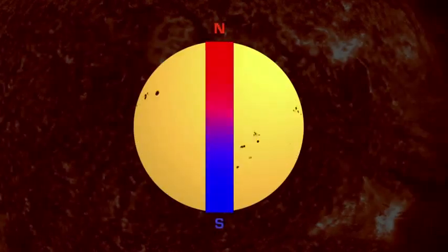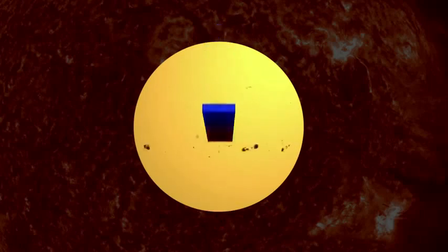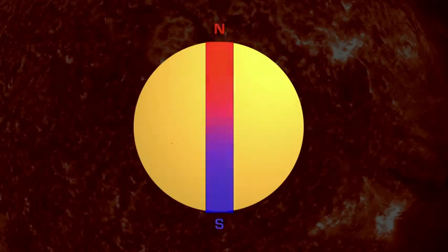Every 11 years, the Sun's poles flip. North becomes south, and south becomes north. So every 22 years, the poles return to the position where they started the cycle.